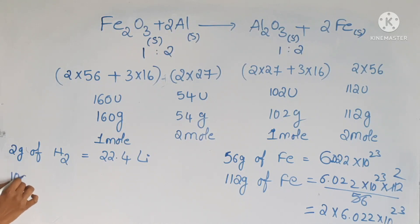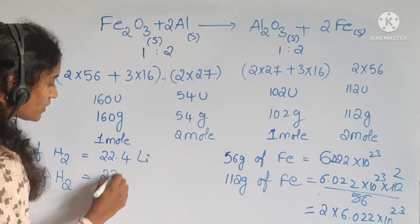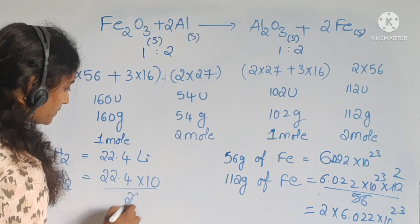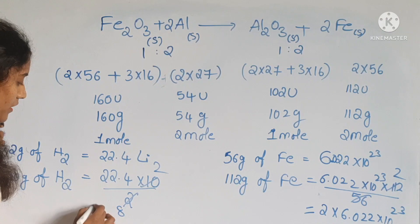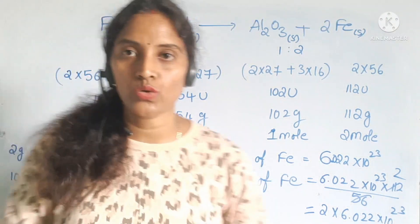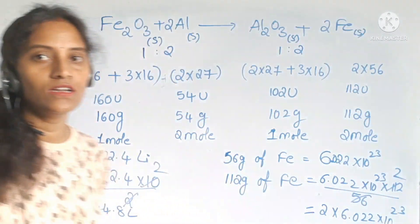Then 10 grams of H2 gas is equal to how many liters? So here also you can do cross multiplication divided by 2. So what is the answer? 44.8 liters is the answer. That means 10 grams of H2 is equal to 44.8 liters.